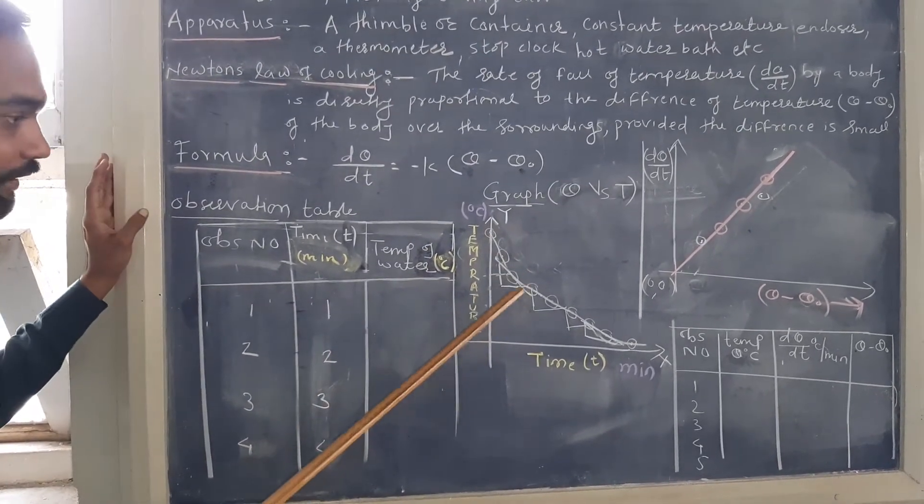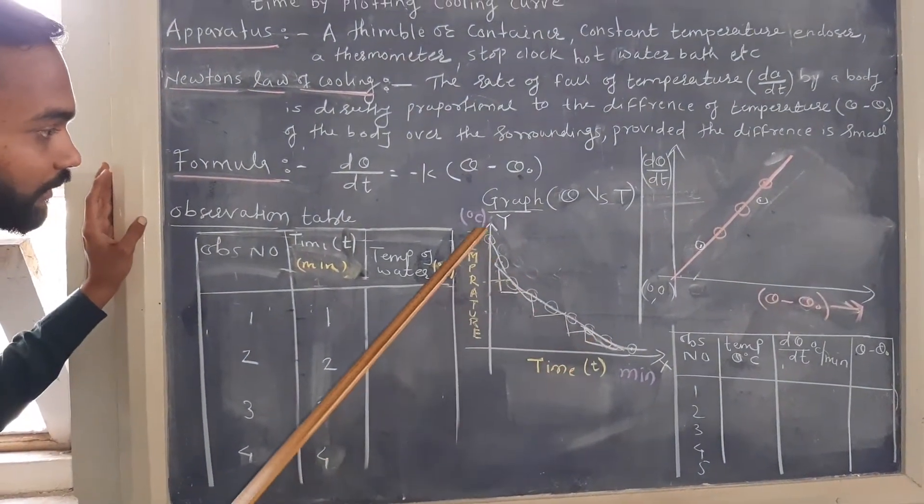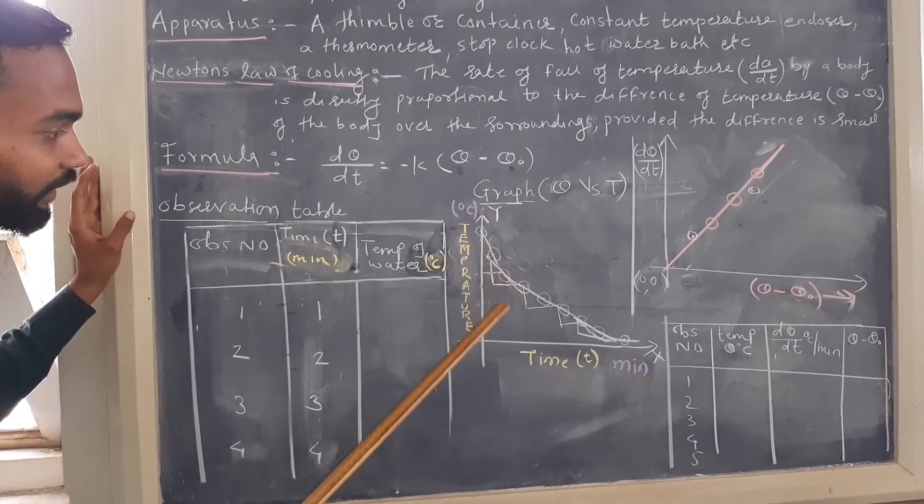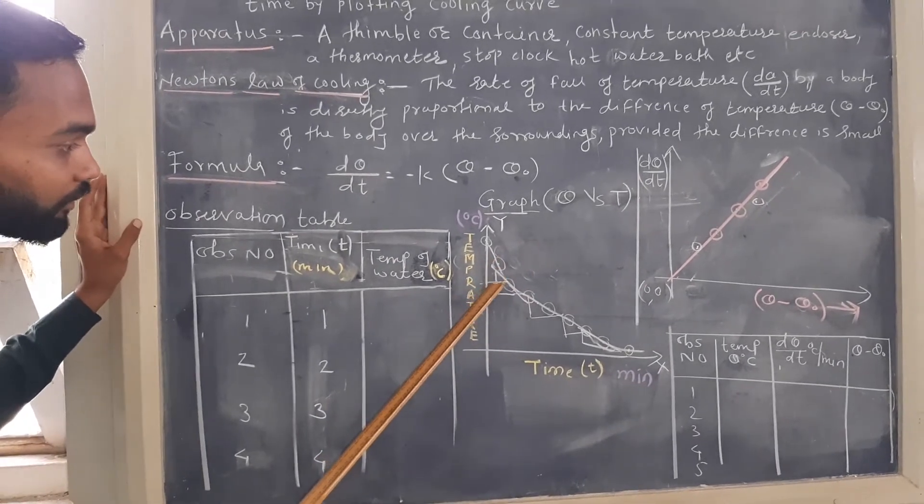Now we need to choose a point and at that particular point we need to draw a tangent. So by using tangent we need to find a slope.